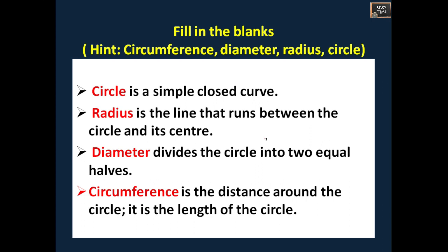Circle is a simple closed curve. Radius is a line that runs between the circle and its center. This is the circle, this is the center, and this point and this circle is radius. Diameter divides the circle into two halves. Circumference is a distance around the circle. This distance around the circle is circumference.